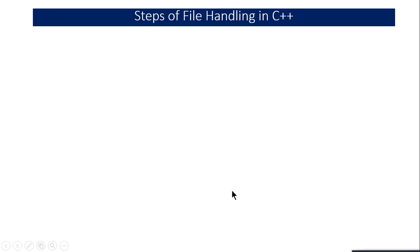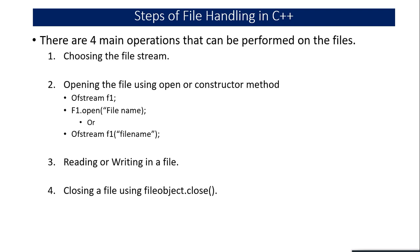If you are implementing file handling in a program, you have to follow these steps. First, you have to choose the file stream — there are three different file streams: ifstream, ofstream, and fstream. You pick accordingly. Then after choosing the file stream, you have to open the file. There are two ways to open a file in C++: one is using the open function and another is using the constructor method.